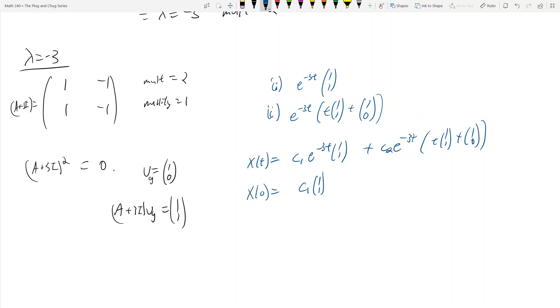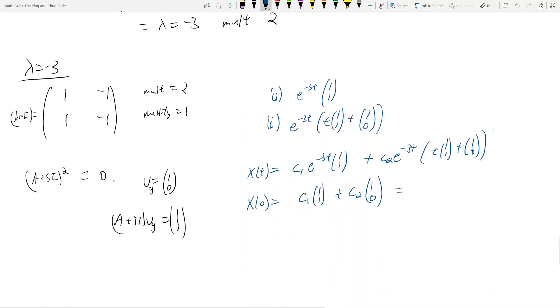So c1*(1,1) plus c2 times this becomes (1,0). And what is this equal to? This is equal to (0,-1).